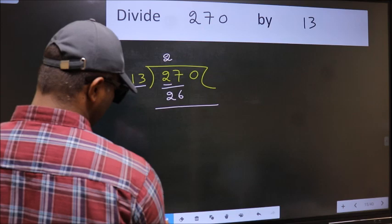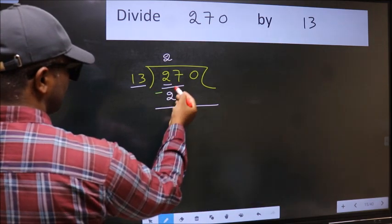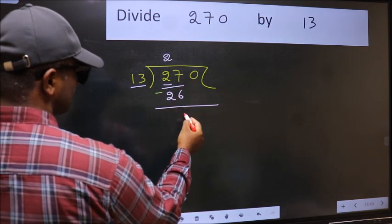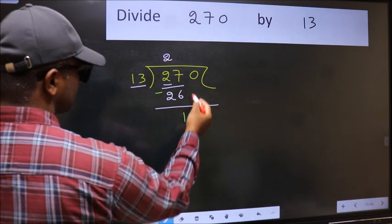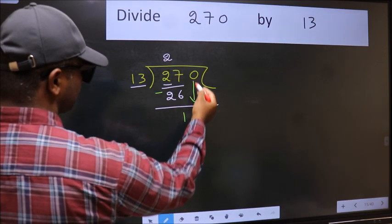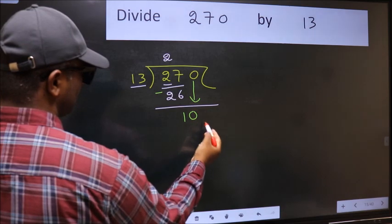Now we should subtract. 27 minus 26 is 1. After this, we should bring down the beside number. So 0 down.